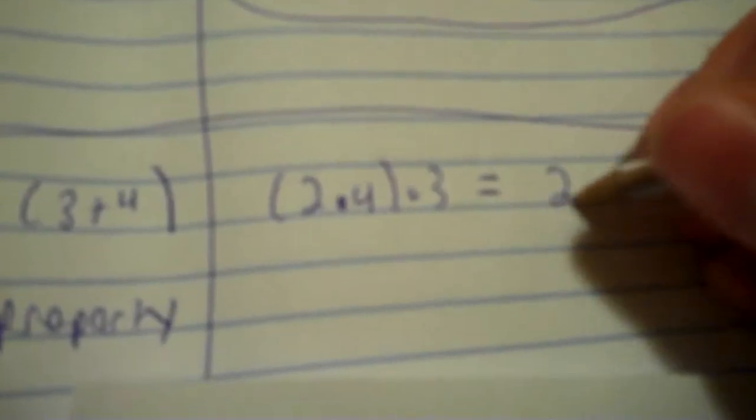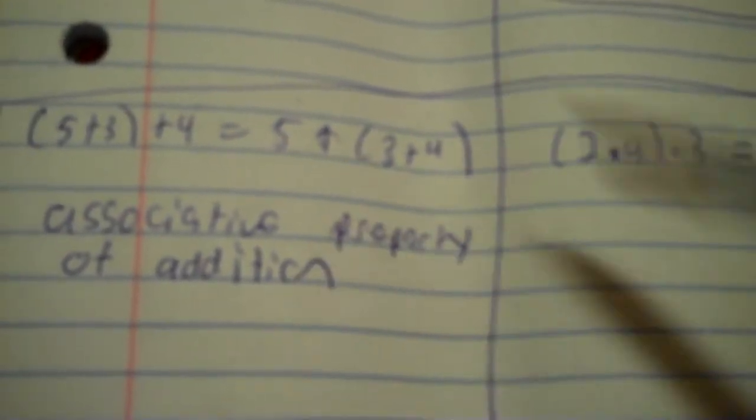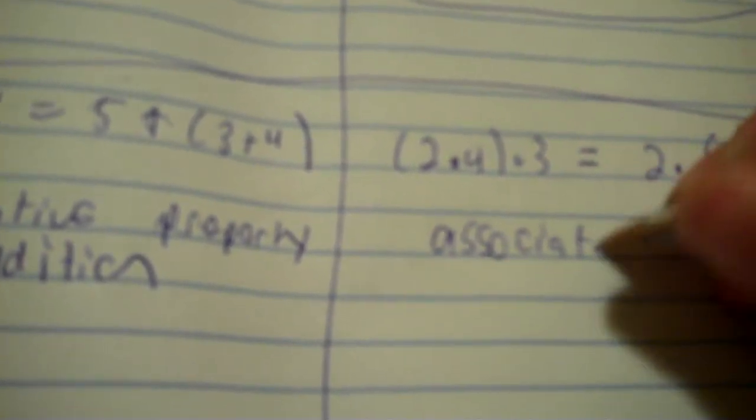Next: (two times four) times three equals two times (four times three). Two times four is eight, times three is twenty-four. Four times three is twelve, two times twelve is twenty-four. They're equal. All that happened is the parentheses shifted around — that's the associative property again, but instead of addition, it's multiplication.